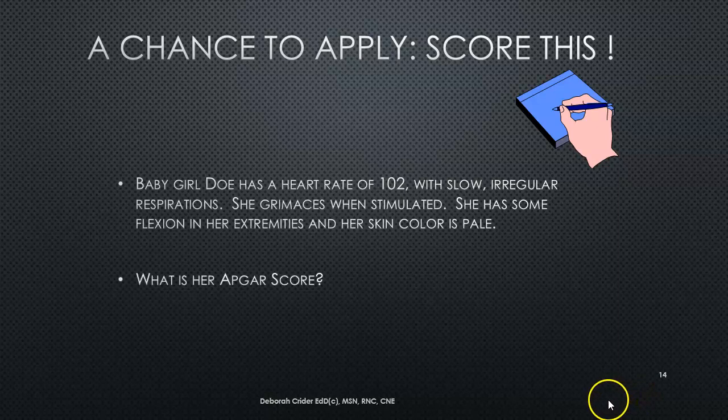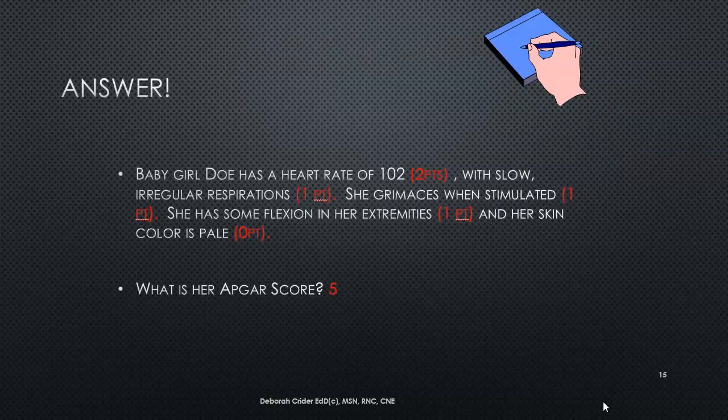Here's another chance to apply. Baby girl Doe has a heart rate of 102 with slow, irregular respirations. She grimaces when stimulated. She has some flexion in her extremities and her skin color is pale. What is her APGAR score? She gets two points for heart rate over 100, one point for slow irregular respirations, one point for grimacing, one point for some flexion, and zero for pale skin color. Her total APGAR score is five.